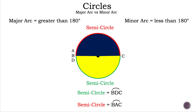Right now we have two semi-circles: the green semi-circle BDC or CDB, and we have the red semi-circle BAC or CAB. Now do we have any major arcs or minor arcs on the screen? Yes we do, but we're just focusing on the semi-circles. If you can find any major arcs or any minor arcs, go ahead and put them in the comments below.